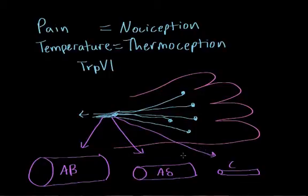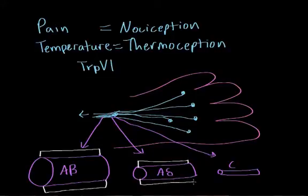Apart from their size, there's also one big difference that distinguishes the different fibers, and that is the presence of myelin. The large A-beta fibers have a whole lot of myelin on them. The A-delta fibers have a little bit of myelin on them. And the C fibers have no myelin on them.